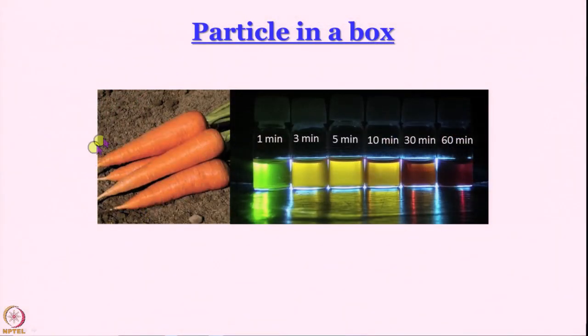We have discussed the free particle and seen that for a free particle, energy is not quantized. Now we are going to put a particle in a box. This model not only teaches us about quantum mechanics, but is also applicable in many chemical systems as a first approximation. It is this model that can tell us why carrots have their beautiful color.